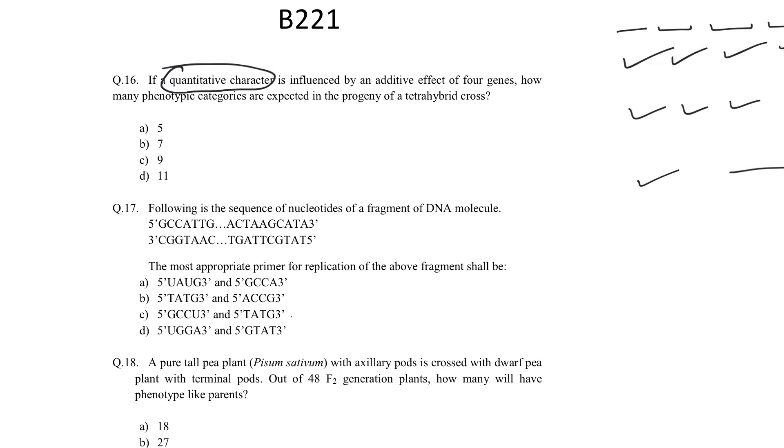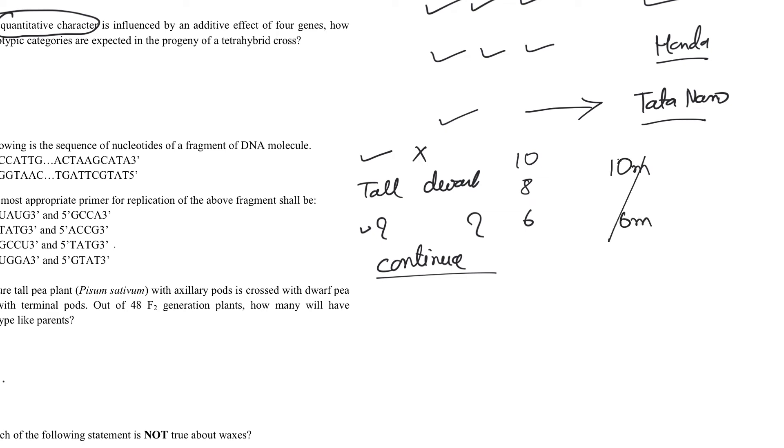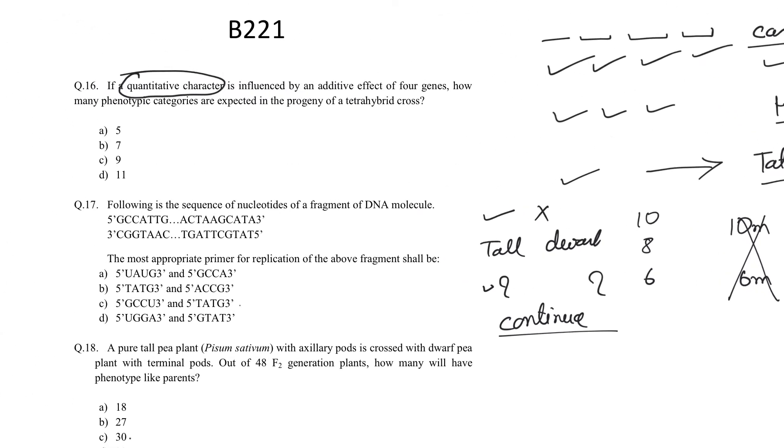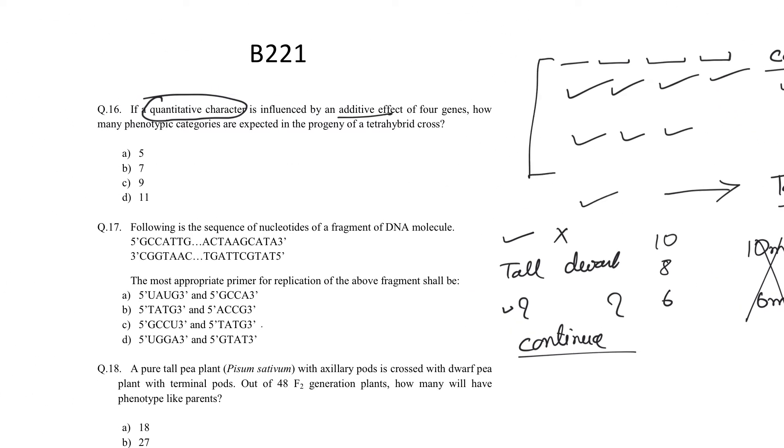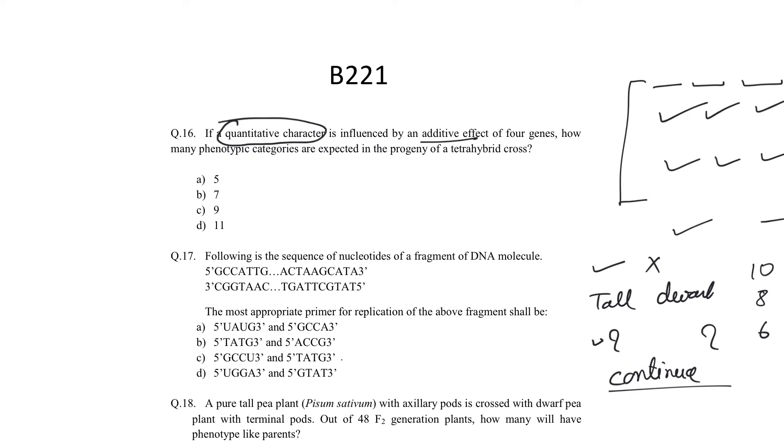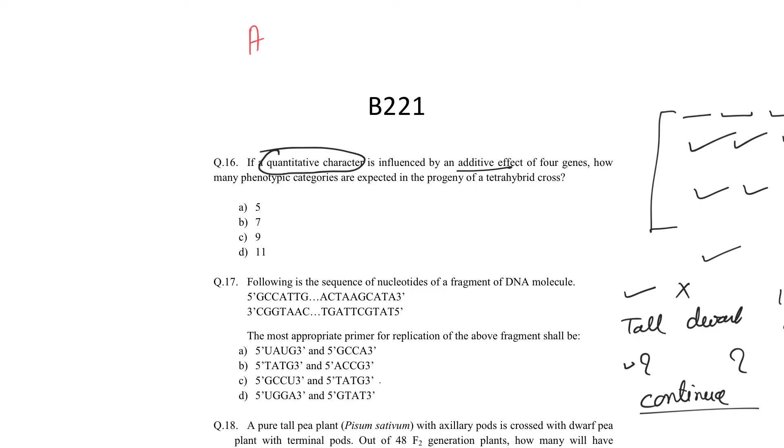Similarly, quantitative characters are not just yes or no, tall or dwarf - it's how tall, how dwarf. There's a continuum. Not half individuals 10 meters, half 6 meters. This is classical Mendelism. Quantitative means it varies, influenced by additive effect. The question mentions four genes - remember, genes not alleles. Let me write them: A, B, C, D. These are dominant alleles, and recessive alleles would be small a, b, c, d.